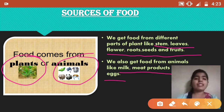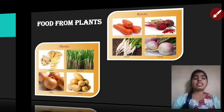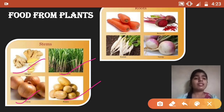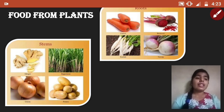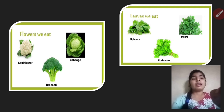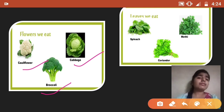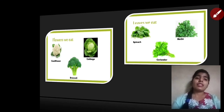Let's see some examples of different parts of plants that we eat. First, stems — examples are ginger, sugarcane, onion, and potato. Roots — examples are carrot, beetroot, radish, turnip, etc. Next, flowers — examples of flowers are cauliflower, cabbage, broccoli, etc.